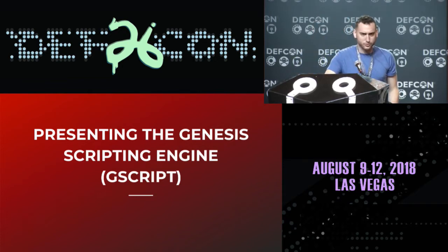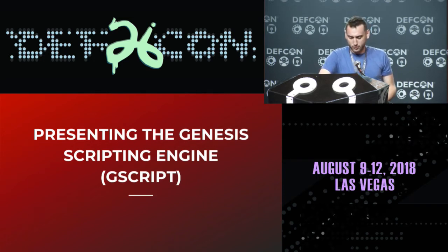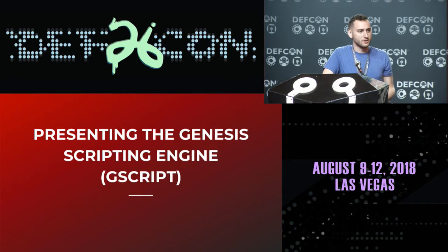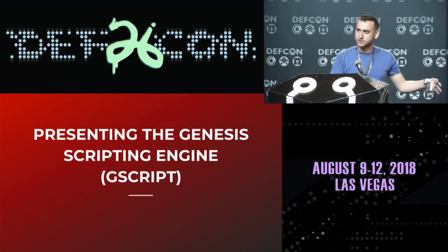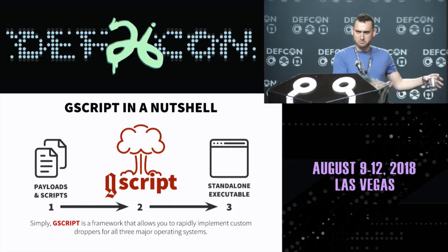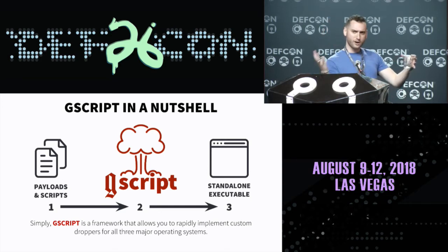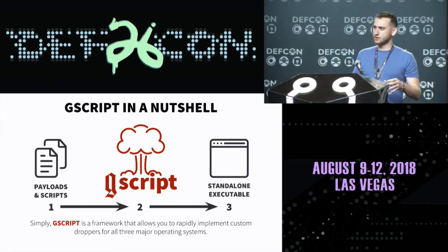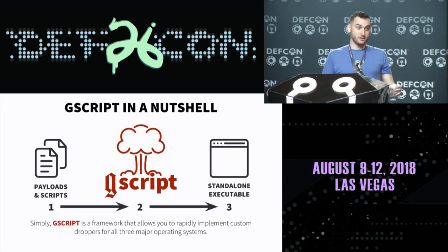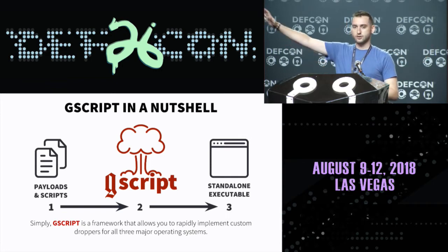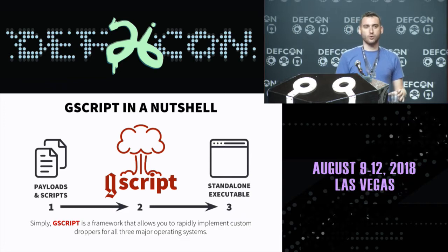As Dan said, today we're going to show the awesome information security community what we've done cumulatively over the last several years, plus some really awesome features that even if you were at CCDC, you didn't get a chance to play with. I'd like to introduce the Genesis Scripting Engine — G-script. What is G-script? It's a dropper that lets us take malware, bundle it together, and throw it at somebody. As a red teamer, you have your payloads, you write a script, use the G-script compiler on the command line, and get out a native binary. It couldn't be simpler.